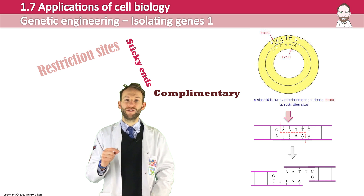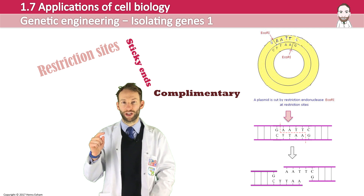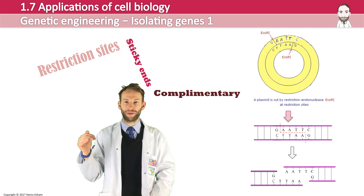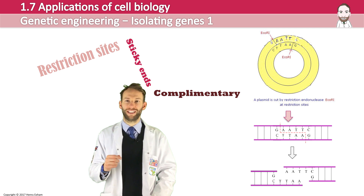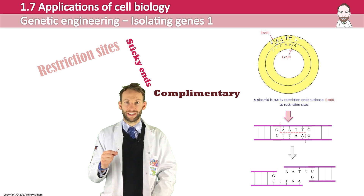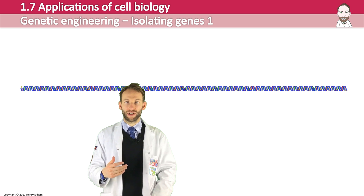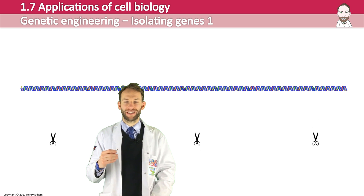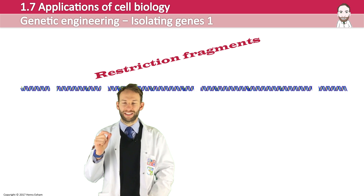If you use the same endonucleases to isolate the desired gene and also to cut open the host genome, then those sticky ends should be complementary, making it easy to patch the gene into the host's genome. However, if you cut the DNA with a restriction endonuclease to get the desired gene, it will cut anywhere where the restriction site occurs, so you will end up with multiple sections of DNA which we call restriction fragments.